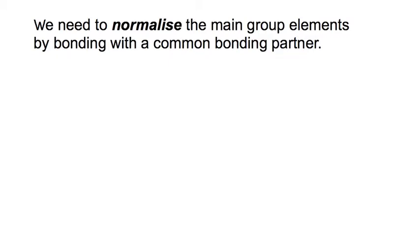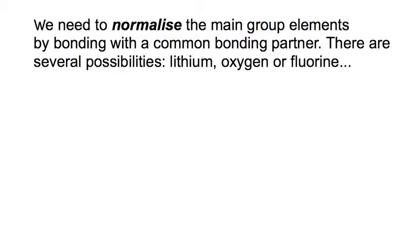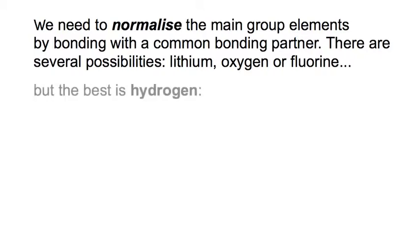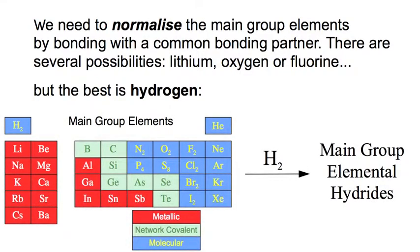We need to normalize the main group elements with a common bonding partner. There are several possibilities: we could take the lithium compounds, the oxygen compounds (oxides), or the fluorides. But by far the best element is hydrogen, to produce the main group elemental hydrides.